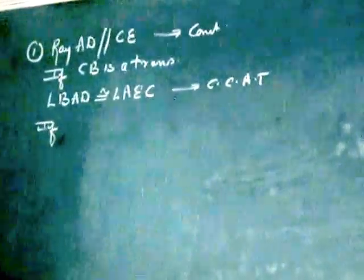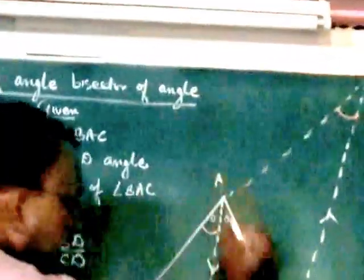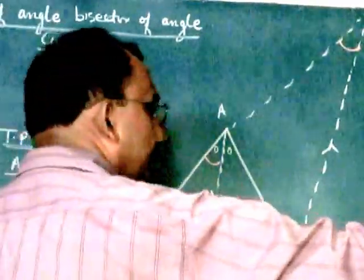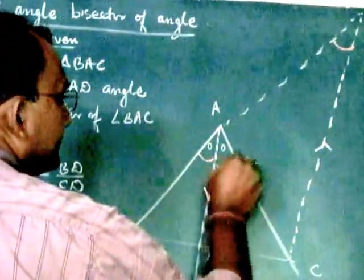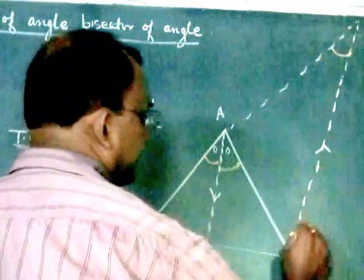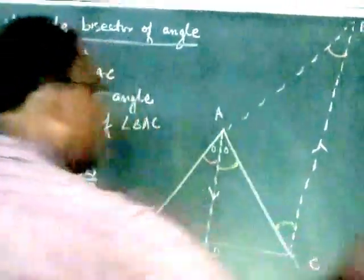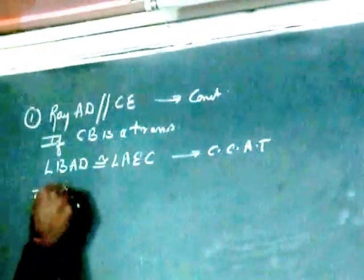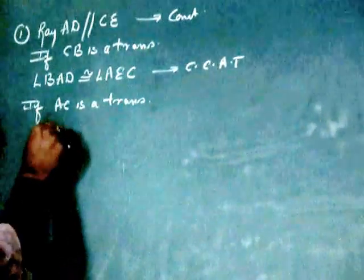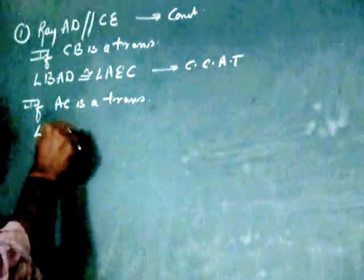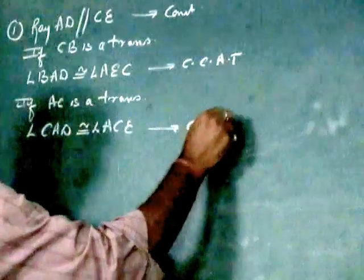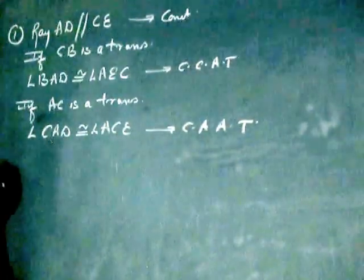If AC is a transversal for the same two parallel lines, if AC is a transversal we shall get angle CAD is congruent to angle ACE. That is, if AC is a transversal, angle CAD will be congruent to angle ACE by converse of alternate angle test. Point number 2.